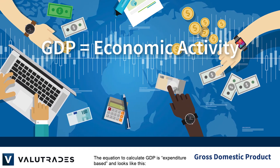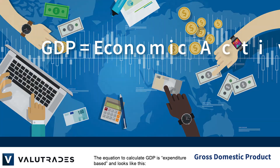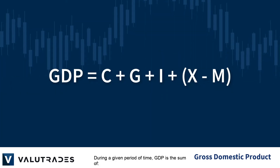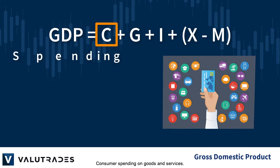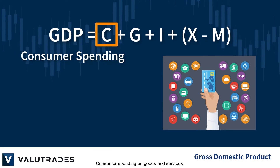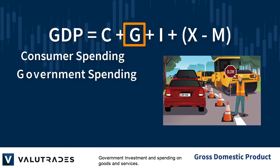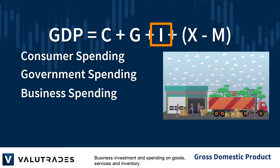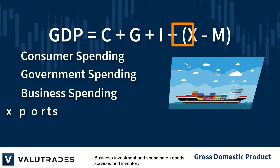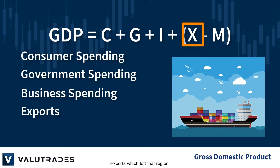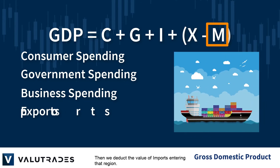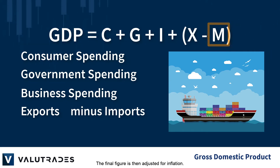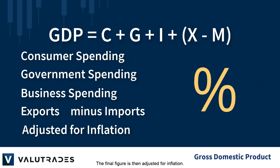The equation to calculate GDP is expenditure-based. During a given period of time, GDP is the sum of consumer spending on goods and services, government investment and spending on goods and services, business investment and spending on goods, services, and inventory, plus exports which left that region, minus the value of imports entering that region. The final figure is then adjusted for inflation.